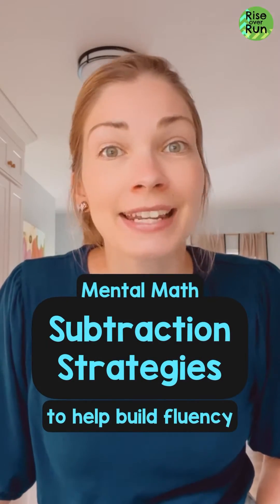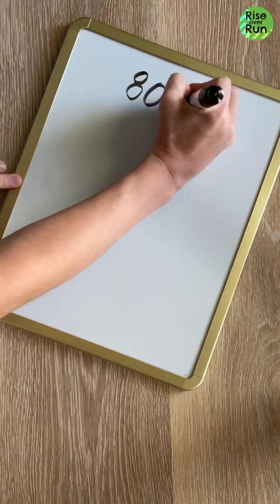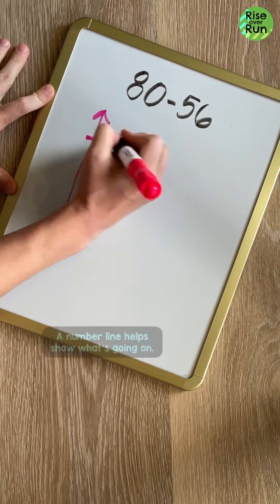Let's look at some mental math strategies for subtracting that will help build fluency. We're going to subtract 80 minus 56, and I'm going to use a number line to show what's going on.